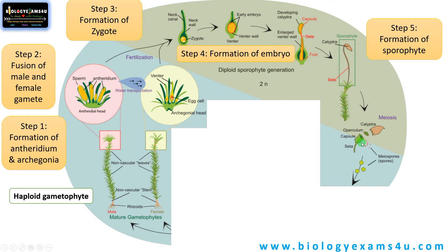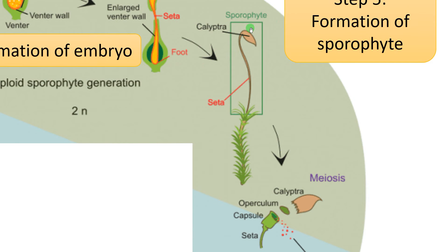Let us see the structure of the capsule. The capsule has a covering called the calyptra. The capsule is made up of three regions: an outer opening or lid called the operculum, through which spores are released; the fertile region called the theca, inside which sporogenous mother cells undergo meiosis — these diploid cells undergo meiosis forming haploid spores; and the basal swollen region called the apophysis, a sterile region that attaches to the seta.